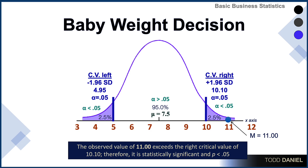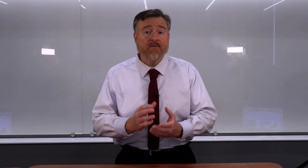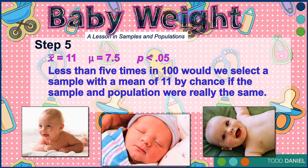There is a statistically significant difference between the sample mean and the population mean at p = .05. To wrap up the baby weight example: the sample mean is 11, the population mean is 7.5. With a criteria of p less than .05 — less than five times in 100 — would we randomly select a sample with that mean by chance if the sample and population means were truly the same.